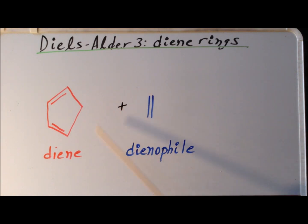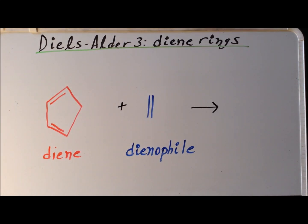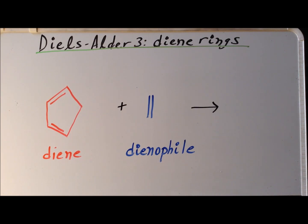And the simplest possible dienophile we could have would be ethylene. In the next few slides, we will see computed structures for the diene, the dienophile, the transition state for the Diels-Alder reaction, and then finally the computed structure of the product.